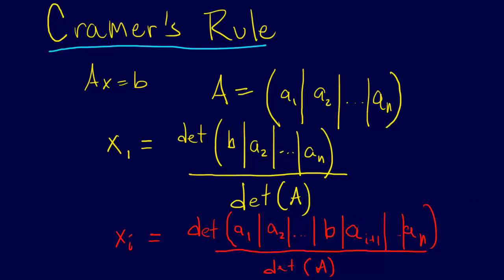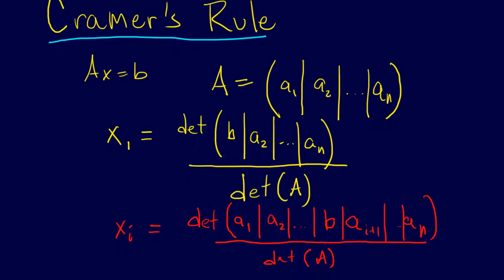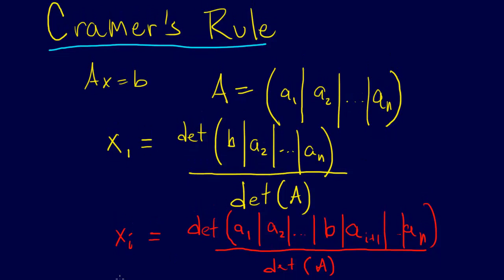So in other words, any of the X's can be written as a ratio of the determinant of some matrix over another matrix. For the numerator matrix that you take the determinant of, you just take the X that we're trying to find, so in this case it was X1, and we substitute B in for that entry.